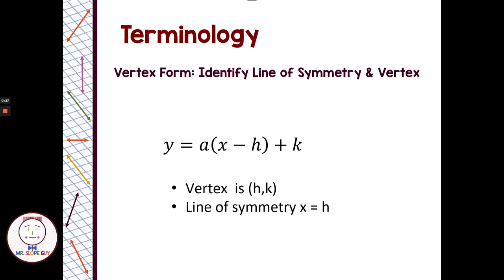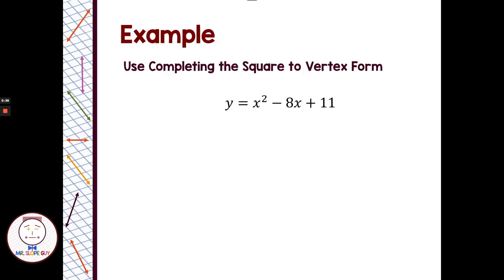This is really helpful when we have an equation in this form — we can quickly look at it, identify the vertex, and identify the axis of symmetry. So let's look at what a problem would look like. Let's say we have an equation given as y equals x squared minus 8x plus 11, and we're asked to use completing the square to change this into vertex form.